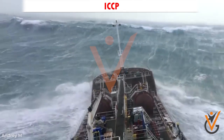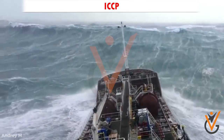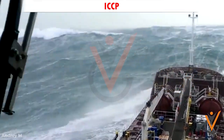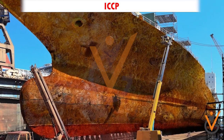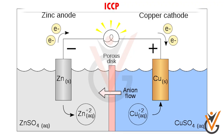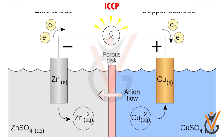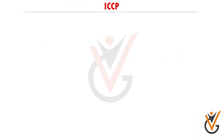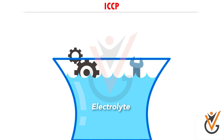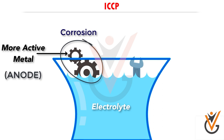Ships are often exposed to very harsh marine environments. Due to the environment in which they operate, the ship's hull is often vulnerable to environmental corrosion. When two dissimilar metals are in contact with each other in the presence of a corrosive medium — electrolyte — the more active metal in the galvanic series acts as an anode and undergoes corrosion.